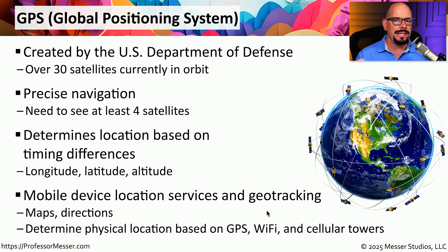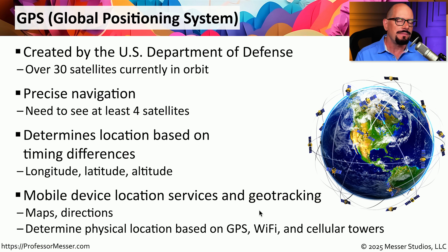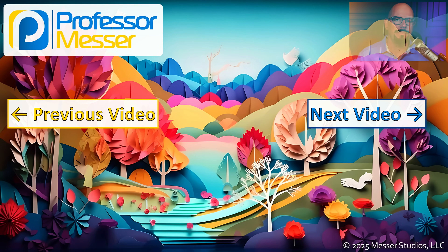GPS is not the only way to determine where you are. Some apps use the Wi-Fi networks around you to get a better idea of your location, even if GPS is not currently available. Some cellular networks are also able to triangulate based on different cellular towers to determine where you might be. So if you're having a problem receiving GPS signals, you may be able to use these other technologies to locate your position.